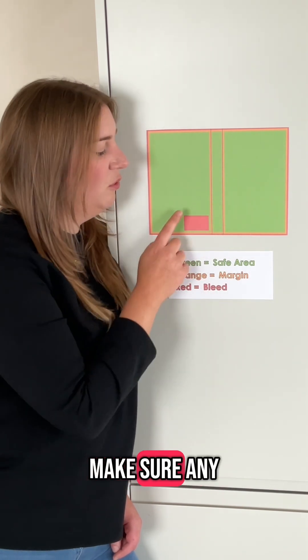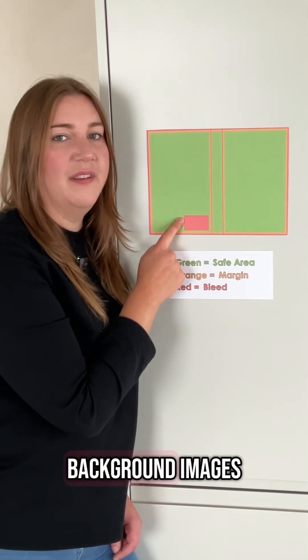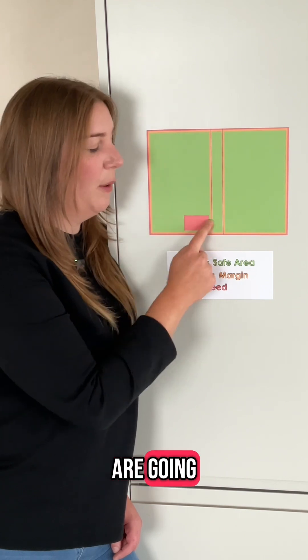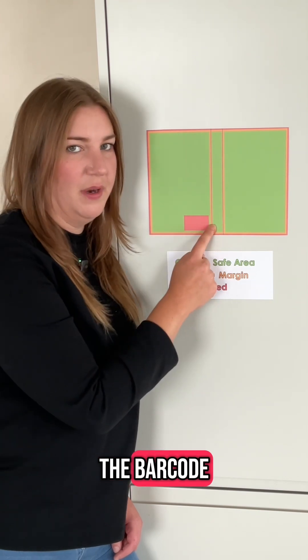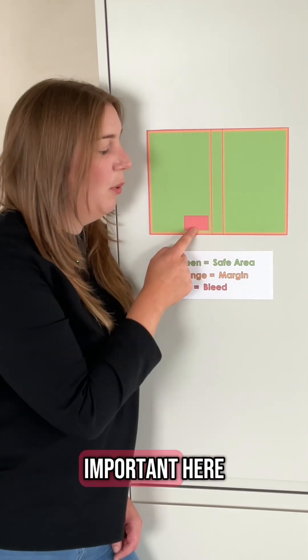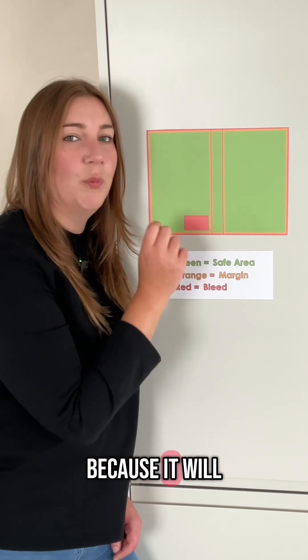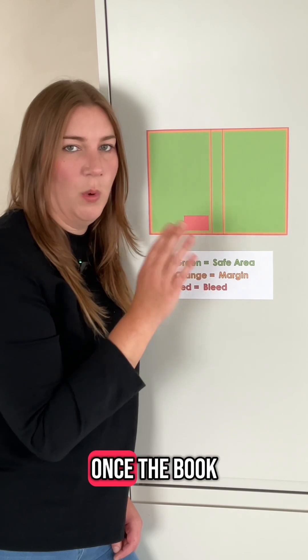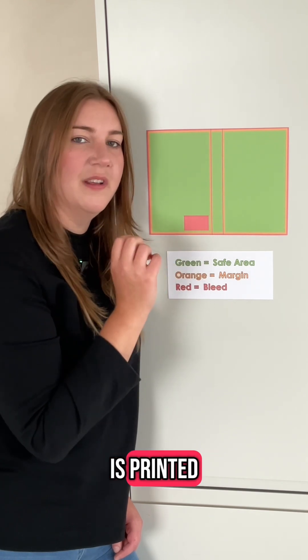Also make sure any background images and colours are going underneath the barcode. But don't put anything important there because it will be covered up once the book is printed.